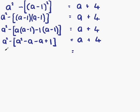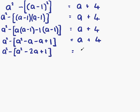Back to the start, we still have our a squared. Now we have our minus sign sitting outside our squared brackets, meaning minus 1 times everything inside. Before we do that, we simplify the like terms inside. We have a squared, then minus a minus a which is minus 2a, and plus 1 on the end. That is still equal to a plus 4.